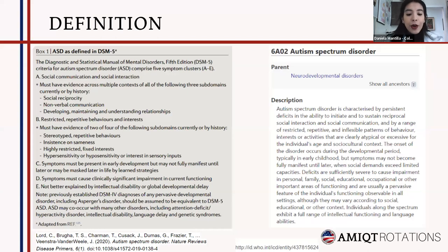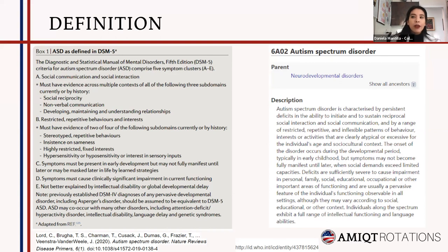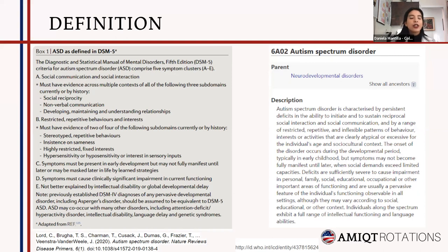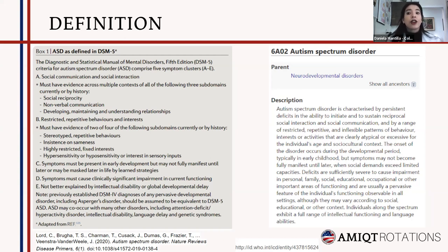According to the DSM-5, the American Psychiatric Association defined Autism Spectrum Disorder as a complex developmental condition involving persistent challenges with social communication, restricted interest, and repetitive behavior. The ICD-11 states that ASD is characterized by persistent deficits in the ability to initiate and sustain reciprocal social interaction and social communication, and by a range of restricted, repetitive, inflexible patterns of behavior, interests, or activities that are clearly atypical or excessive for the individual's age and sociocultural context.